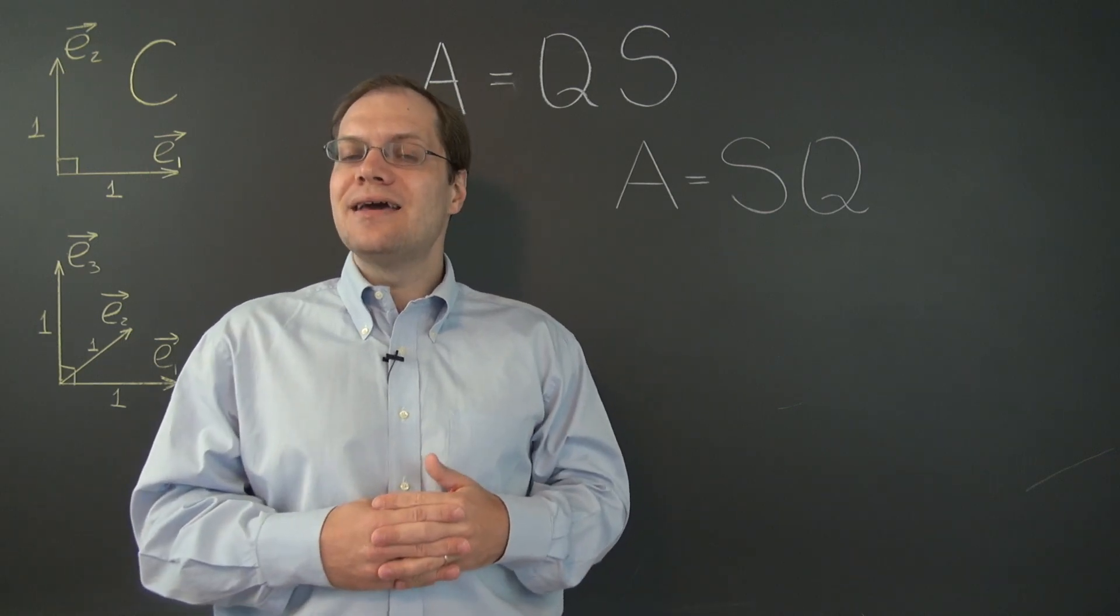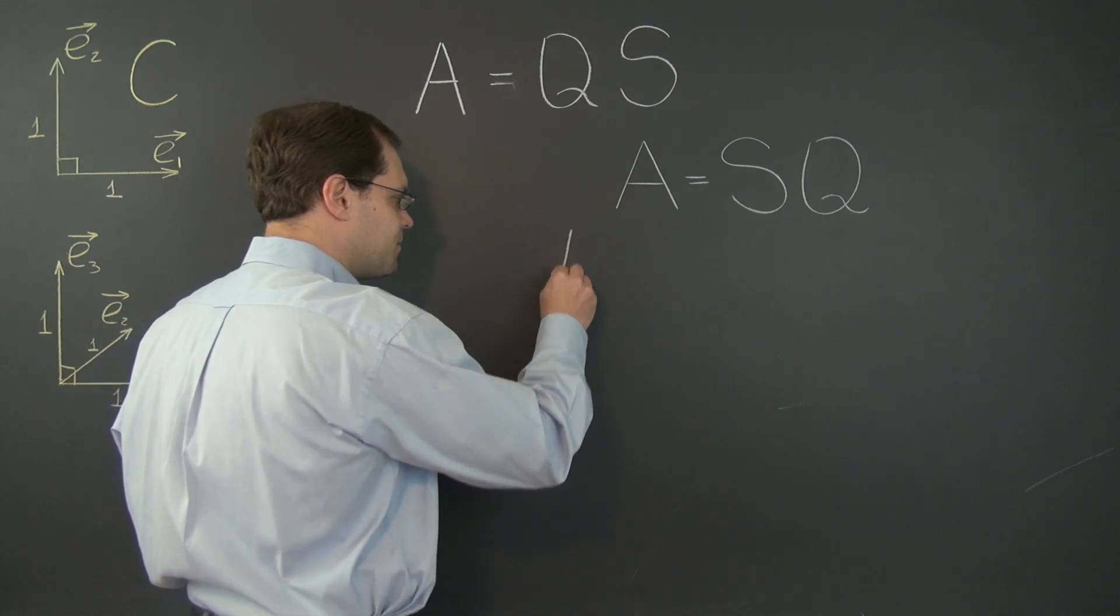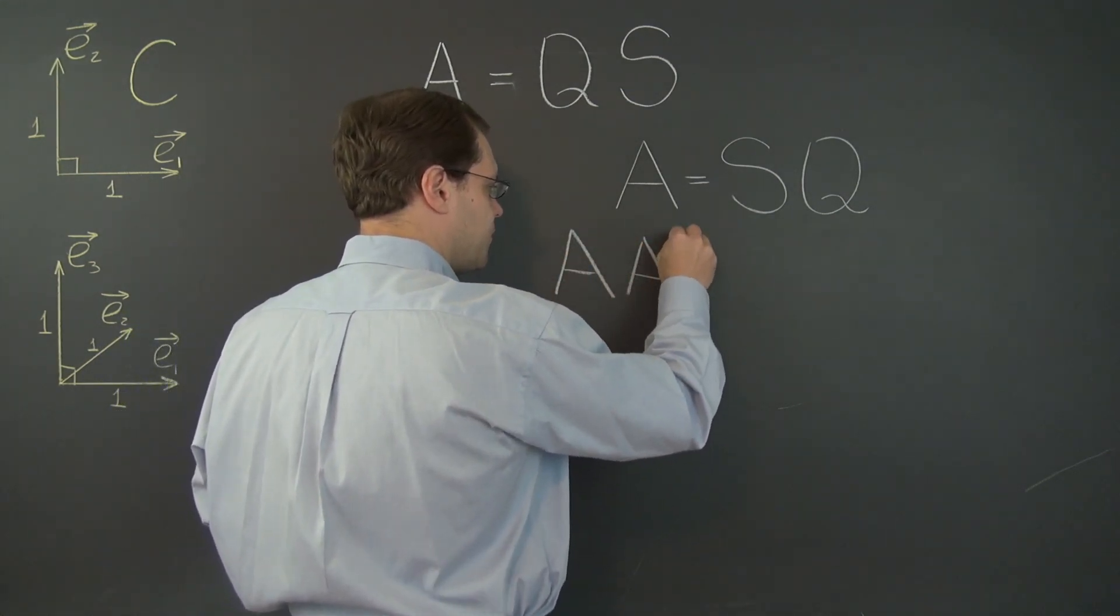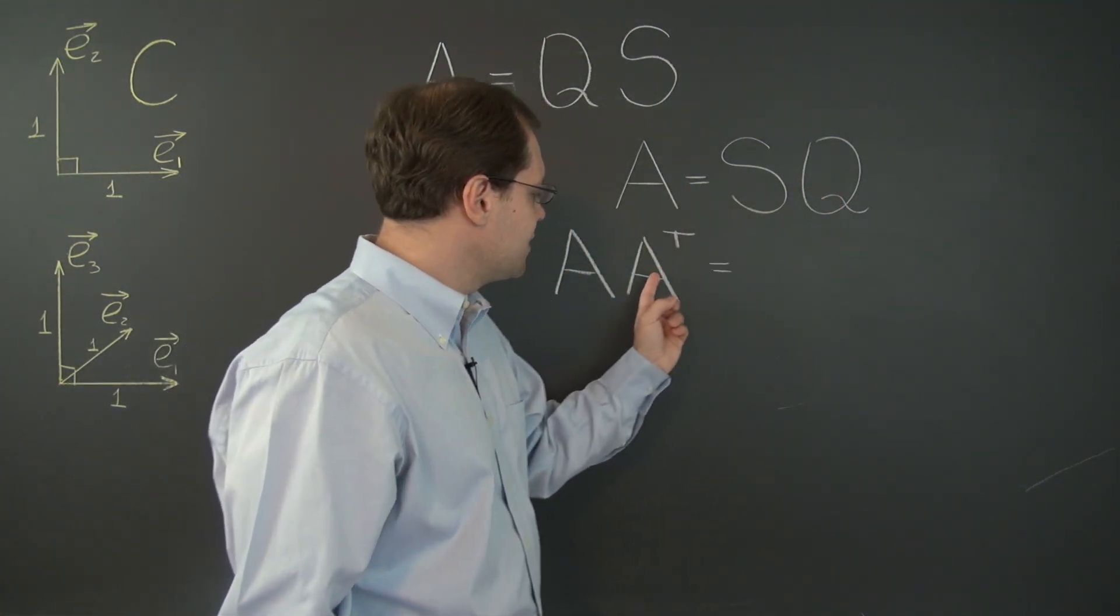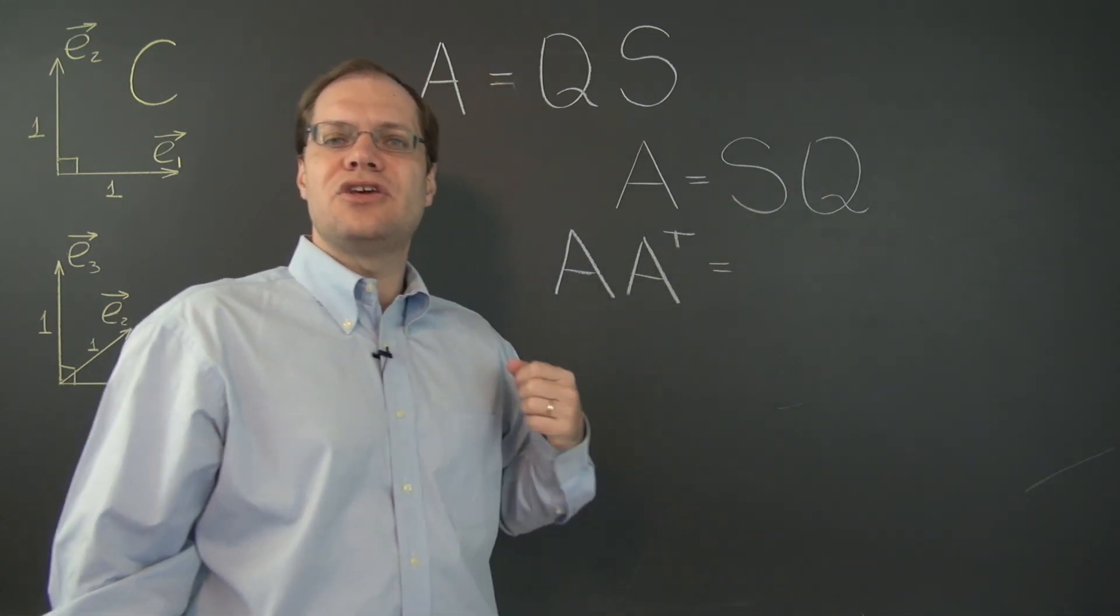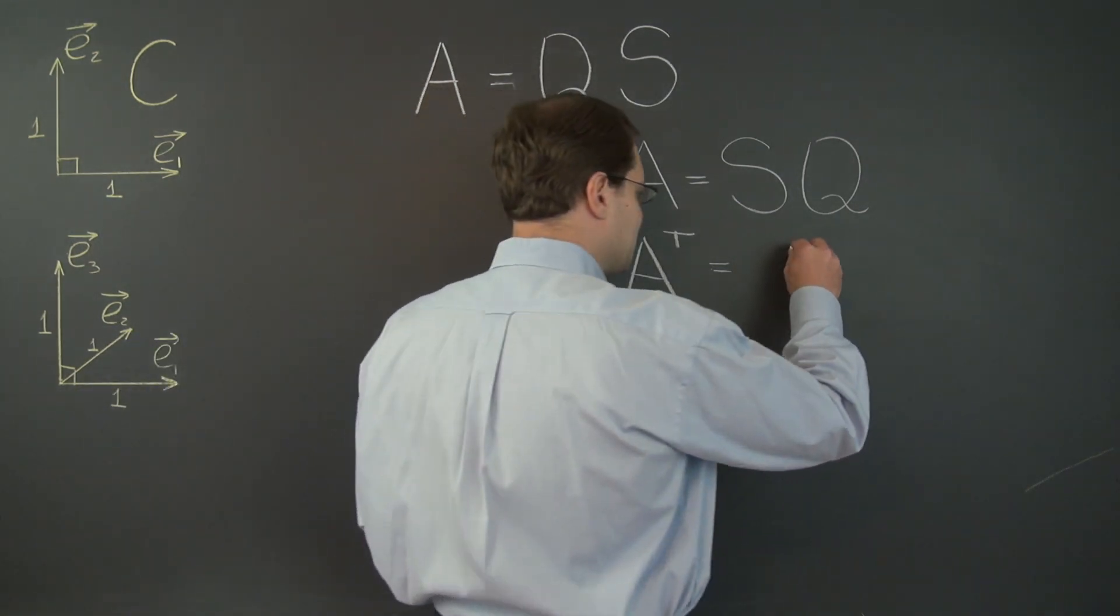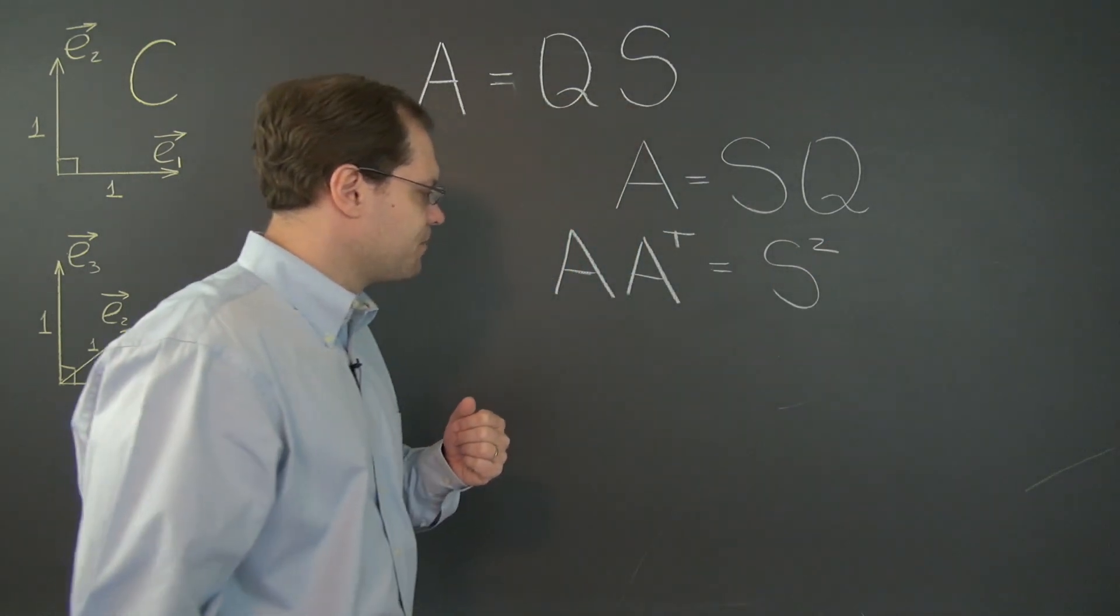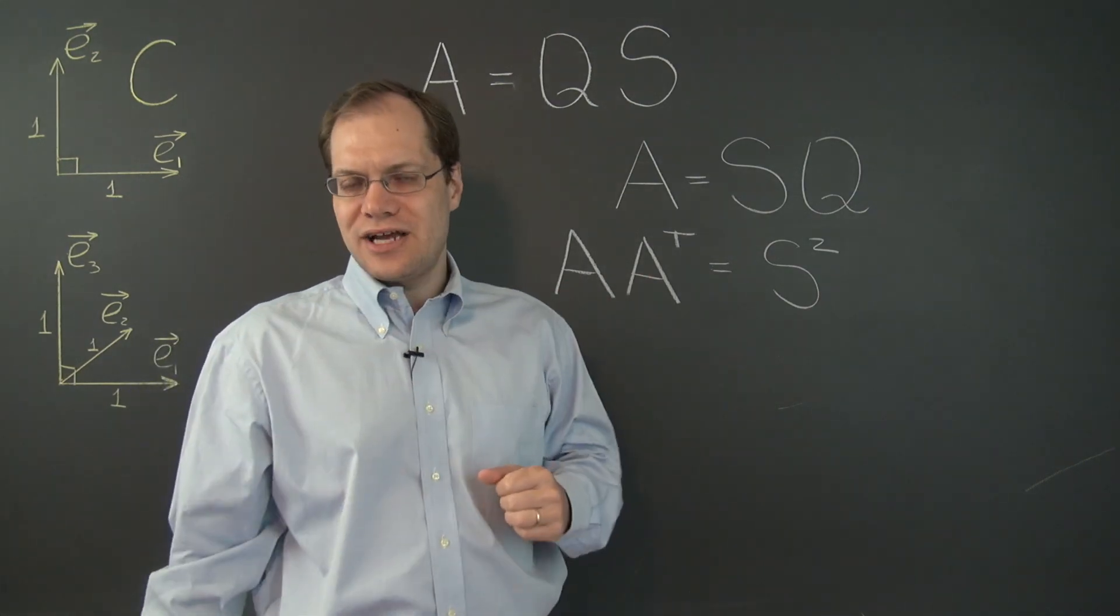Well how about A A transpose instead? Well that does the trick because A A transpose equals S Q times Q transpose S transpose. So once again Q is next to Q transpose and this product evaluates simply to S squared just as before. Except before we had A transpose A and now we have A A transpose.